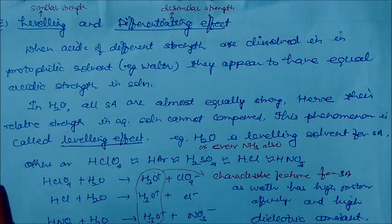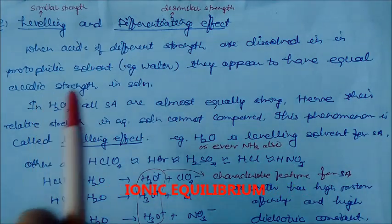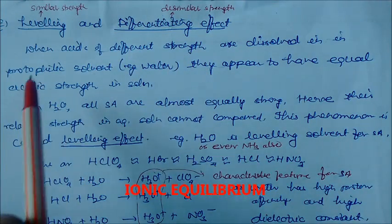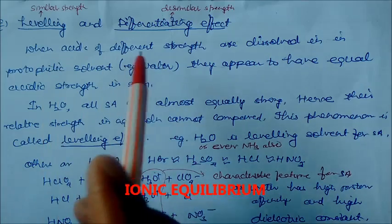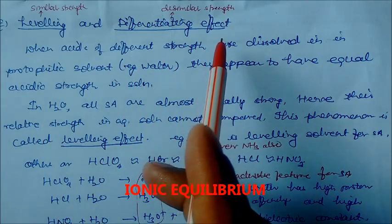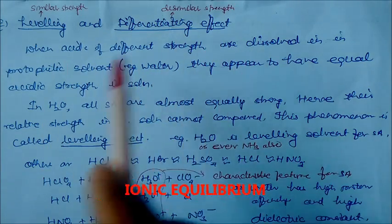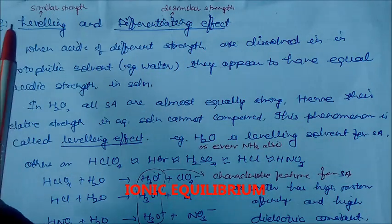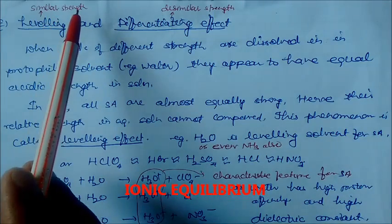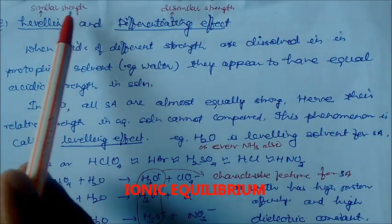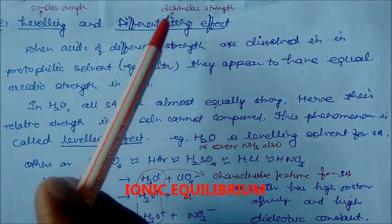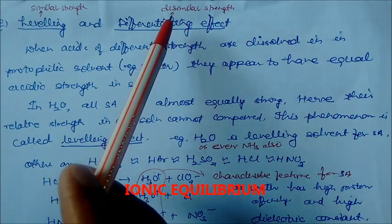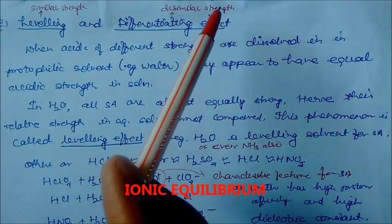Welcome to the next session of Bronsted and Lowry acid-base concept. In this session we will study about the leveling and differentiating effect of acid and base. Leveling means the acid is showing similar strength, similar level of strength. Differentiating means the acid or base will show a dissimilar level of strength.